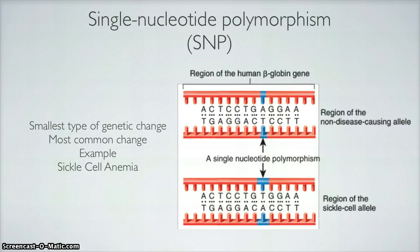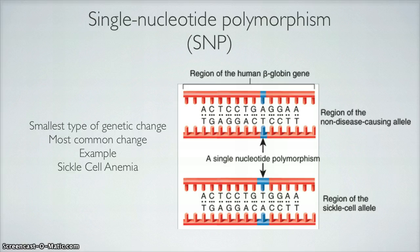Single nucleotide polymorphism. This is the most common change in a polymorphic allele — also the smallest type of genetic change, but the most common. The picture on the right shows how sickle cell anemia occurred: adenine and thymine just swapped in a single nucleotide swap, and that caused the beta globin gene to not be as functional, so it cannot carry as much oxygen — hence the sickle cell shape.